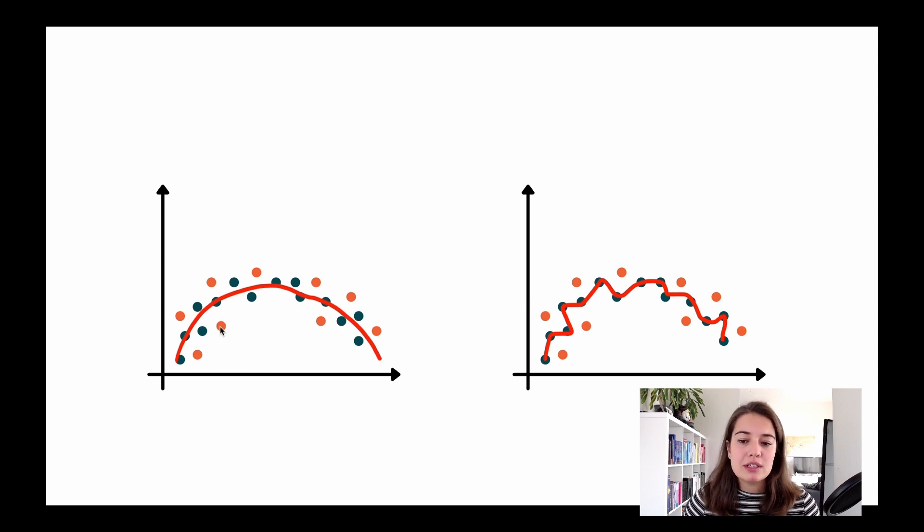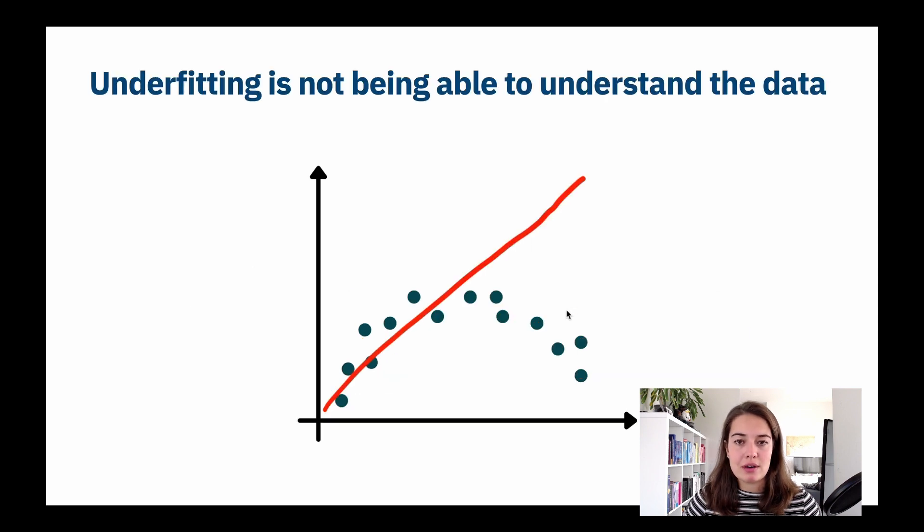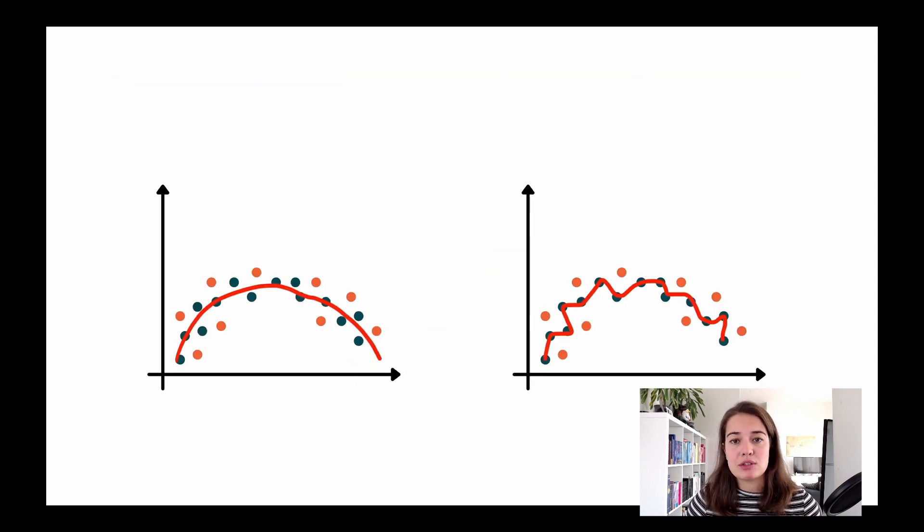So for example, for this one, the error was only going to be this much, right? But now because the line is following all these dots, we're going to have a bigger error. So that's why we don't want a model that's overfitted. Overfitting, even though it looks good on the training set, it's not going to look good on the validation test sets, and it's not going to give us a good performance in the real world.